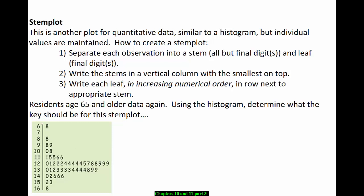So the stems are over here to the left of this vertical line. And the leaves are all to the right of the vertical line. We write the leaves in increasing numerical order in row next to the appropriate stem. So let's take a look at this example stem plot for the residents age 65 and older data again.